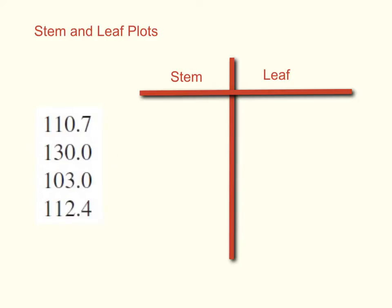When using a stem and leaf plot, I take numbers that are similar in size and I break them apart into pieces, displaying them to show how they have a similar stem but different leaves. So let's take a look.